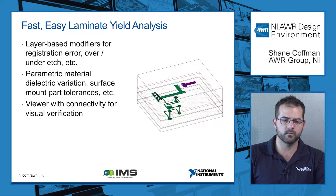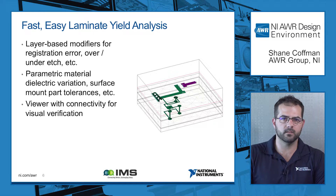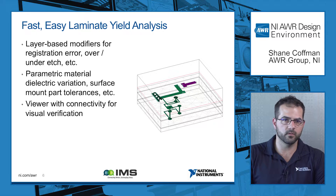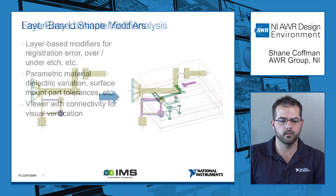AWR has some great tools for laminate design. For example, when you're looking at the registration error or over and under etch, we have layer-based modifiers which shift entire layers, and it makes looking at these particular manufacturing variations very easy to set up in our environment. In addition, the dielectric variations and the surface mount part tolerances are extremely easy to set up as well — they're just parameters, so you can do a parametric sweep or set up a particular yield distribution for these parameters. Lastly, we have a viewer with connectivity for visual verification.